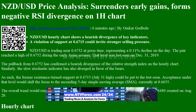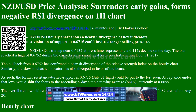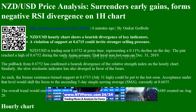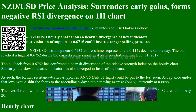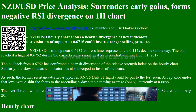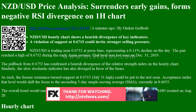The NZDUSD hourly chart shows a bearish divergence of key indicators. A violation of support at 0.6715 could invite stronger selling pressure. NZDUSD is trading near 0.6732 at press time, representing a 0.11% decline on the day.